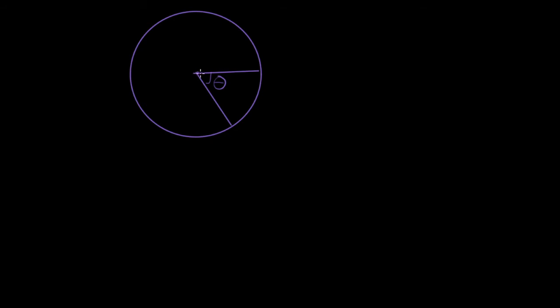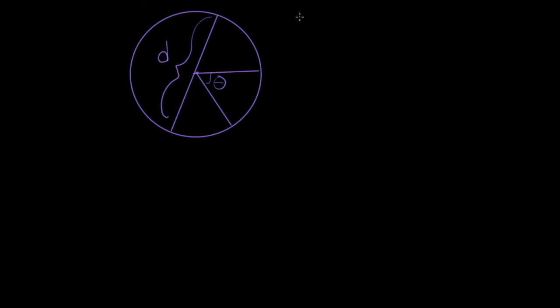This angle right over here is theta. We know that in a circle the ratio of the circumference to the diameter is a constant, and that's known as pi. Any line in a circle that extends from one end to the other is called the diameter — for example, this line right here could be a diameter of the circle.